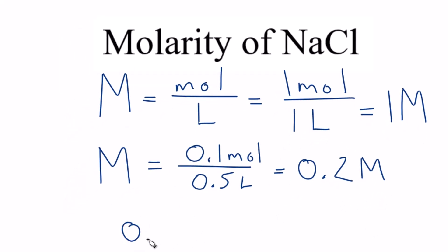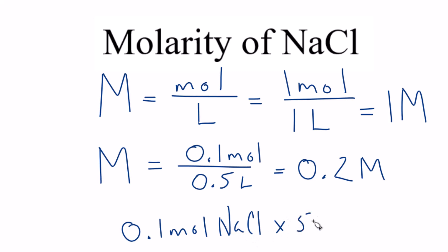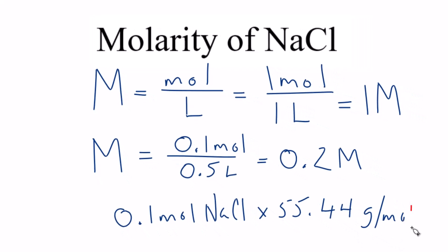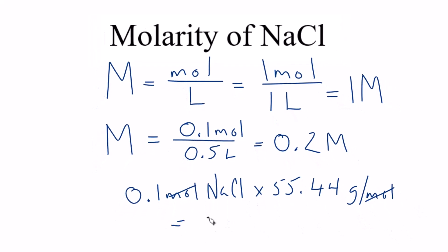We have 0.1 moles. To go from moles to grams, we multiply by the molar mass of sodium chloride, which is 55.44 grams per mole. When we multiply, the moles cancel and we're left with grams — that gives us 5.54 grams of NaCl.